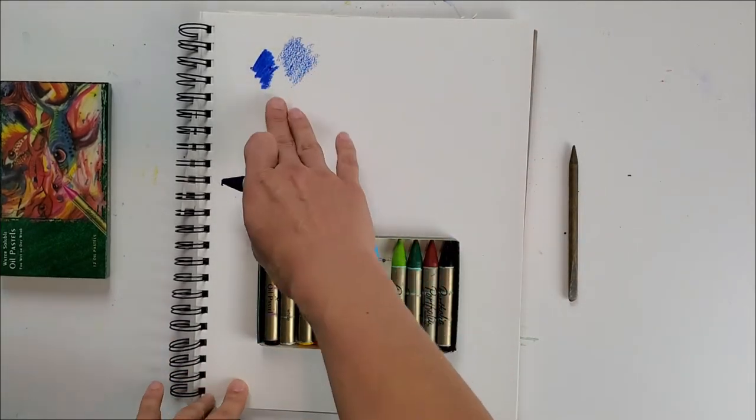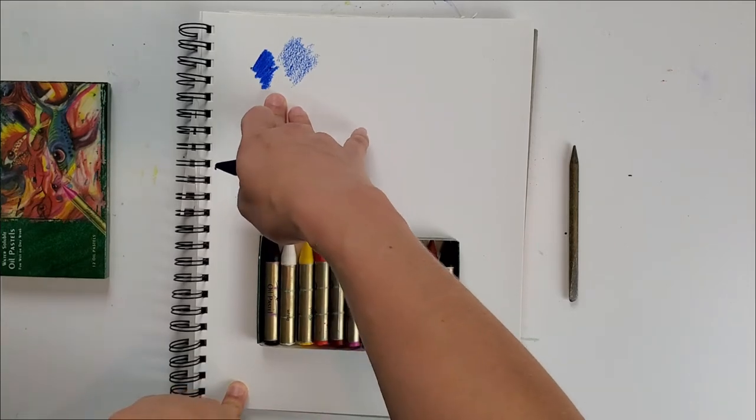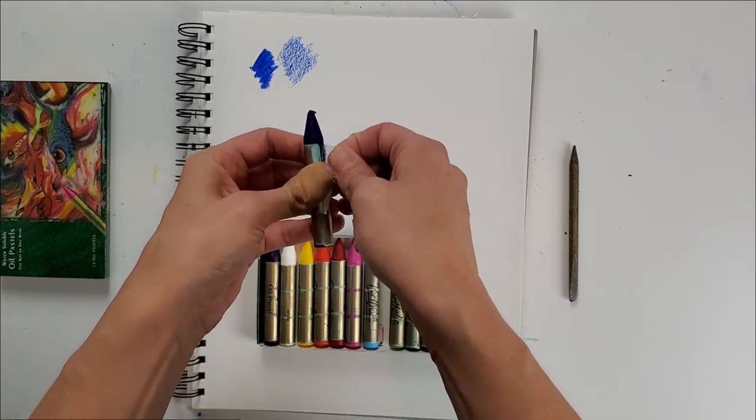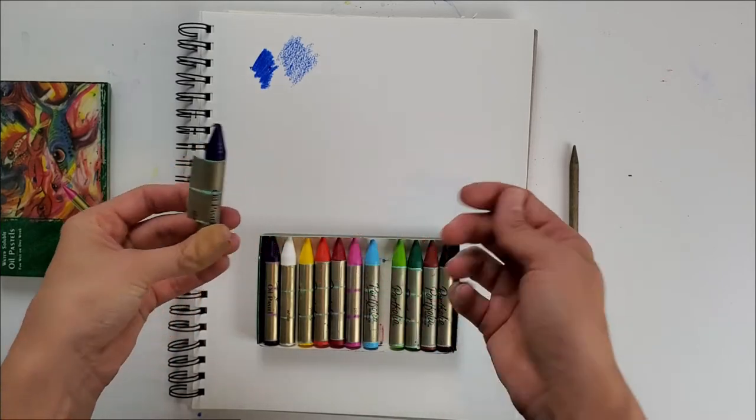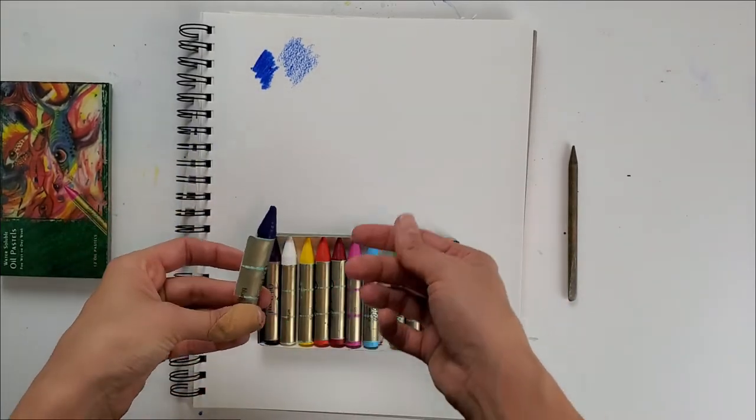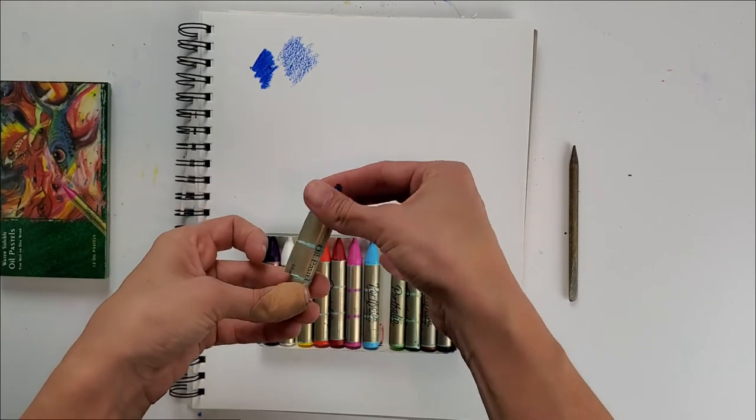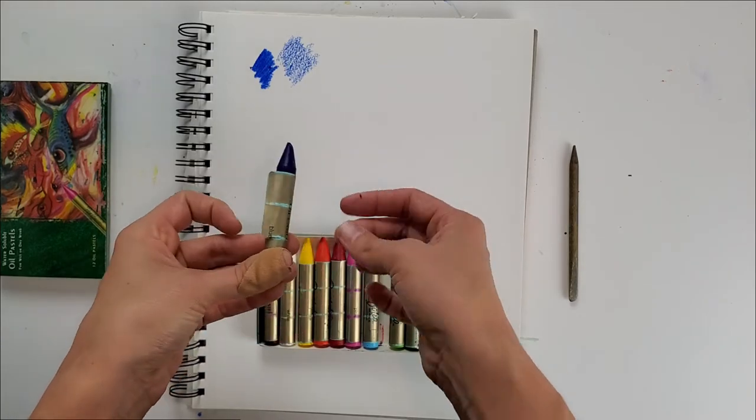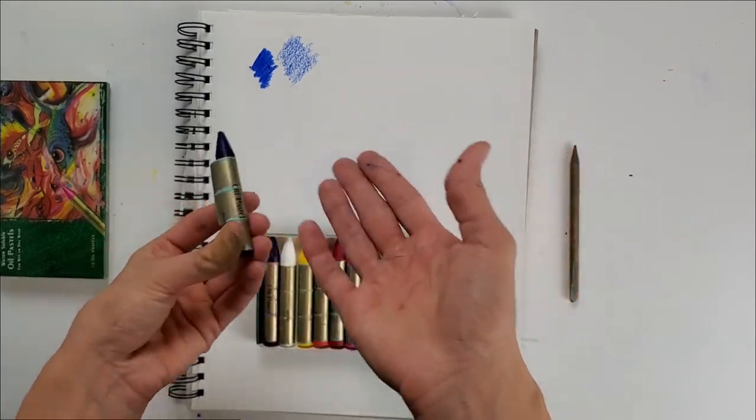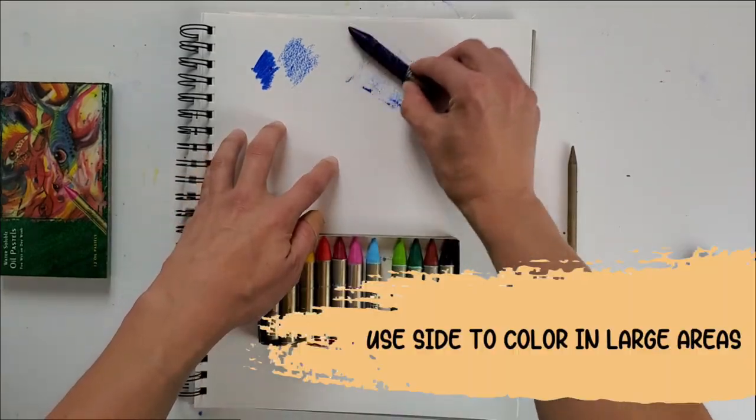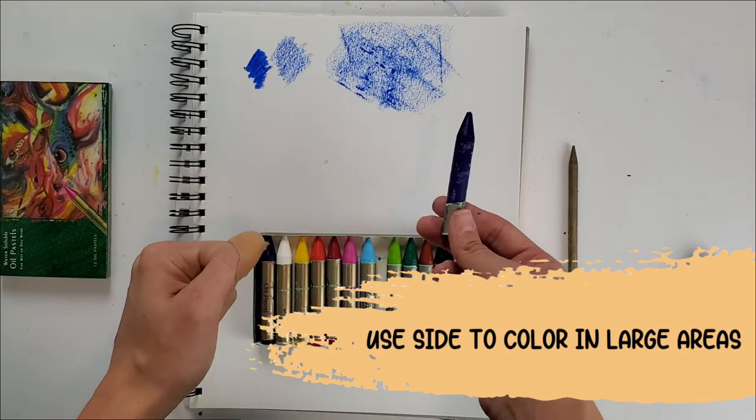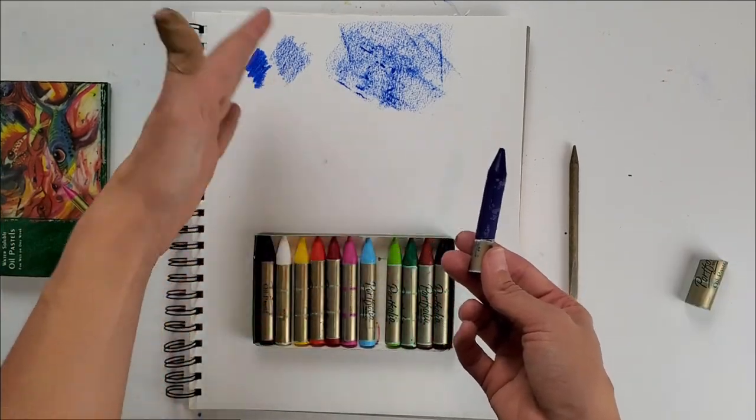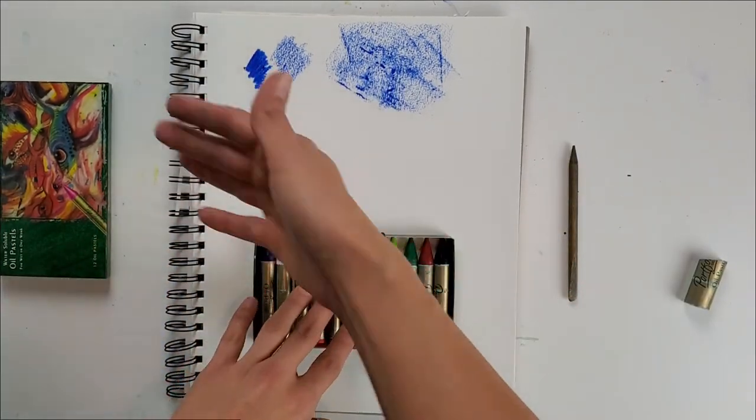If I peel paper off of my oil pastels, I can use the side here. I like that these have the paper on it because you'll notice that oil pastels are a little bit sticky, so keeping the paper on is beneficial for that.